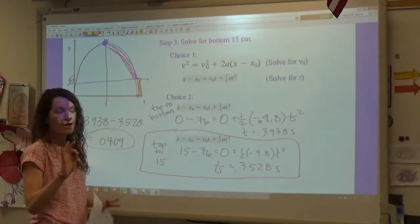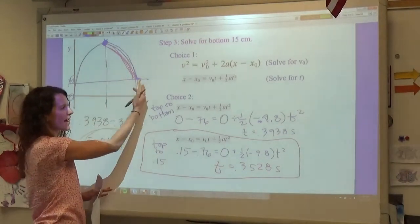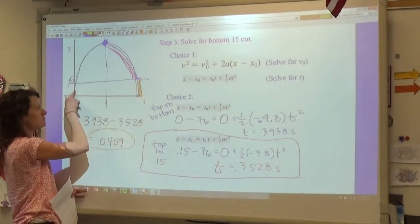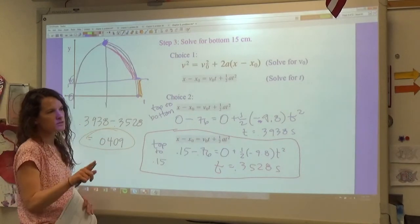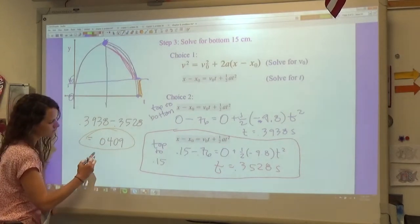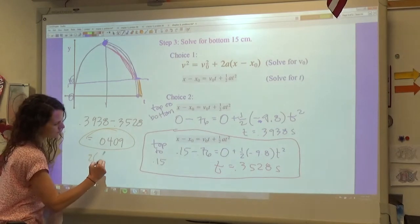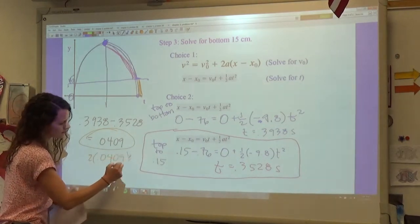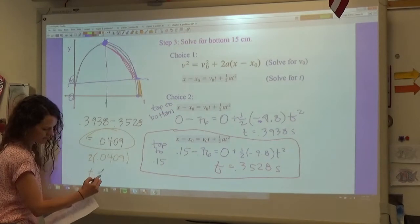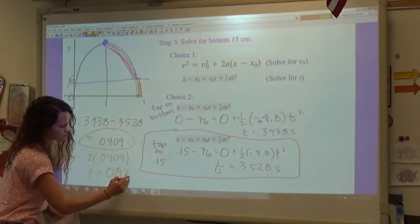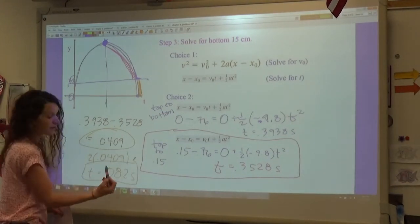So this is what I've labeled here, the orange time right there. So that's the bottom 15 centimeters, however it's only for half of the motion. We did not include this piece over here. And so what I want to do is I want to multiply that by two. So 2 times 0.0409 will give us the final answer of 0.082 seconds.